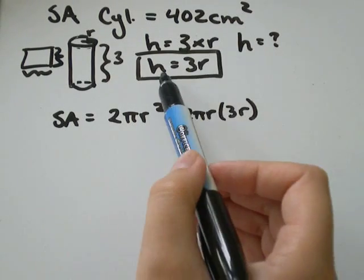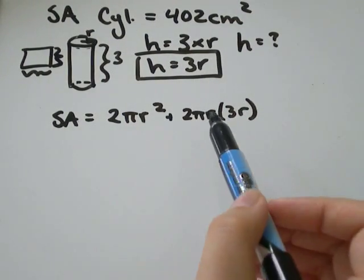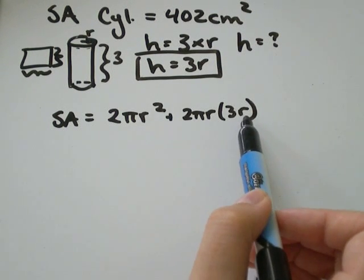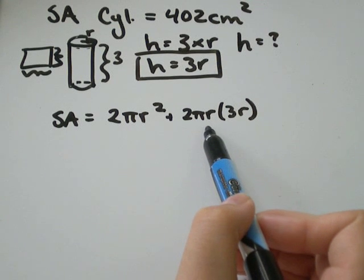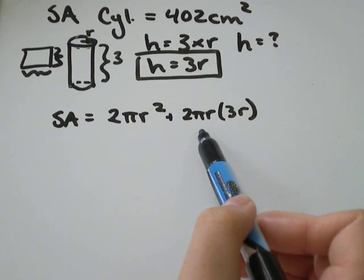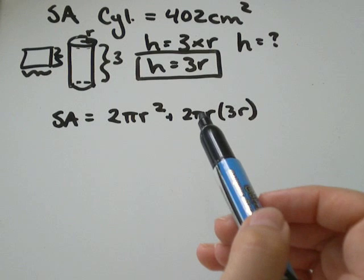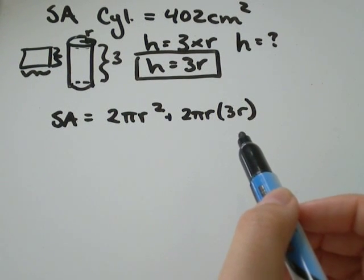The reason we let h equal to 3r is because now we only have one variable in our equation. We only have r. We don't have h's and r's. If you had h's and r's, you wouldn't be able to solve it. And this should have been, yeah, πr².